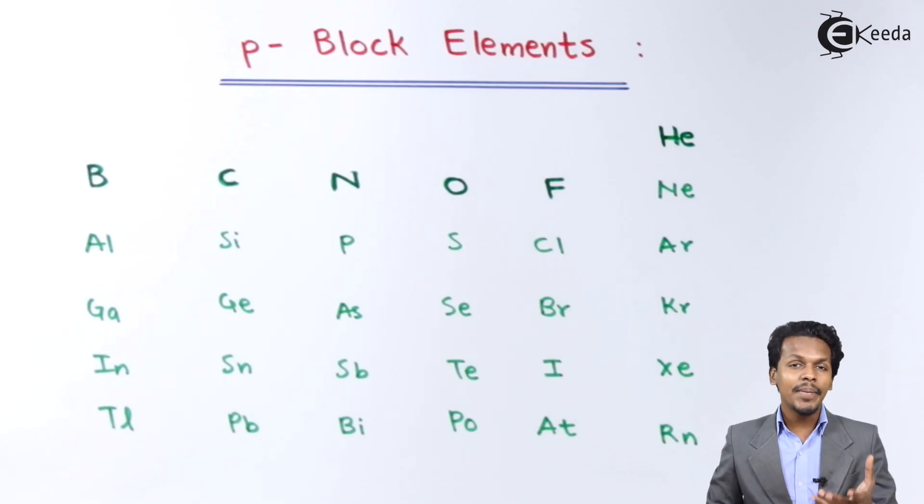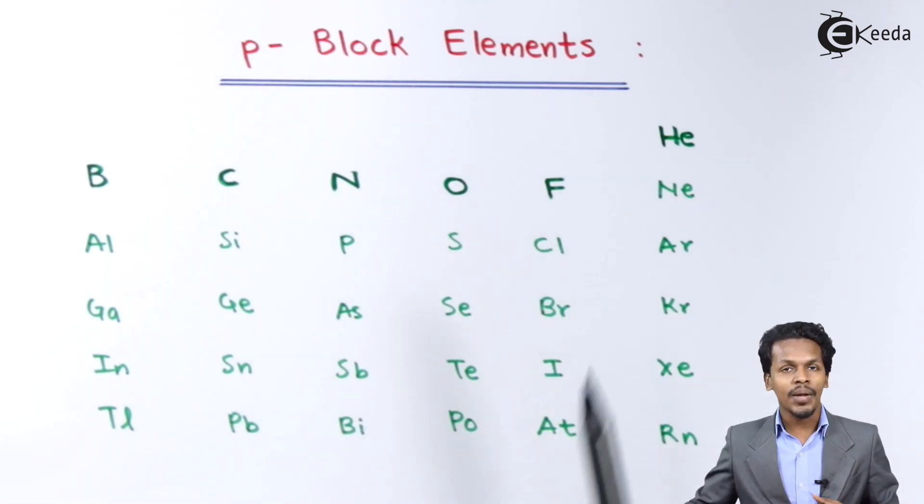In this topic, let me make you understand what is actually P-Block Element. P-Block Elements are those elements in which the valence electron enters in the P-Orbital. That's the reason the name is P-Block Elements. Talking about the P-Block, this is what I am going to talk about, starting with the first one.